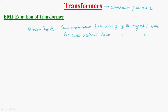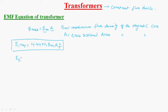So E1_RMS = 4.44 × N1 × B_m × A_n × F, where A_n is the net cross-sectional area. This is the EMF equation of the primary winding. Similarly, for the secondary winding, the EMF equation is E2_RMS = 4.44 × N2 × B_m × A × F — the only thing that changes is the number of turns, N2.